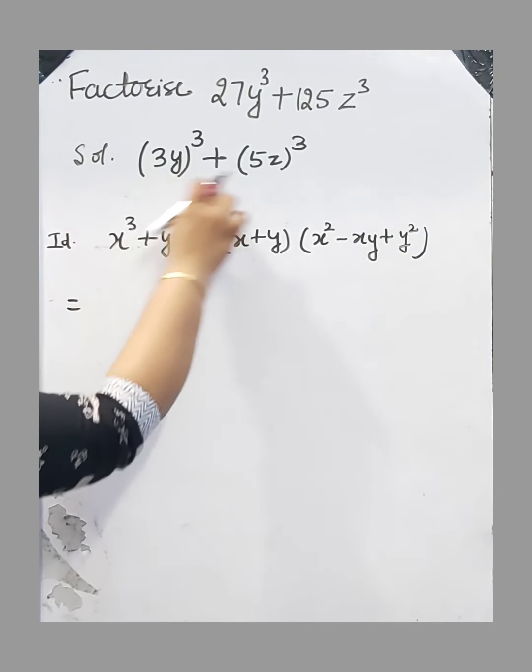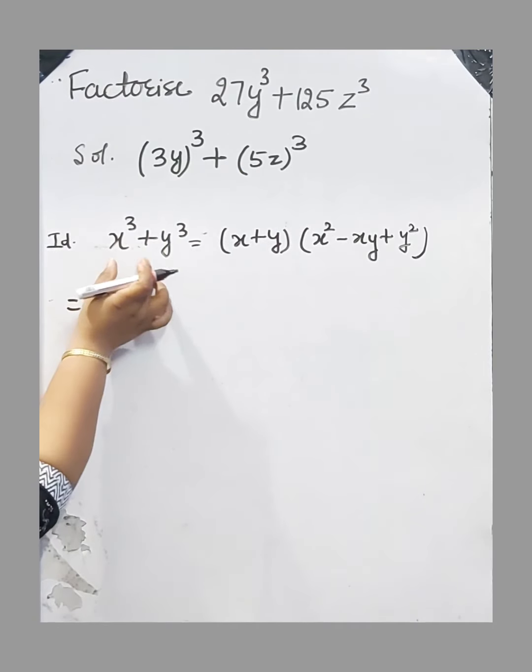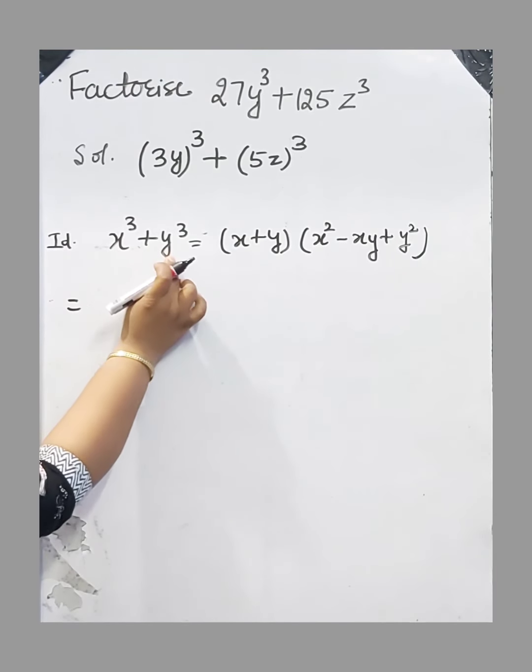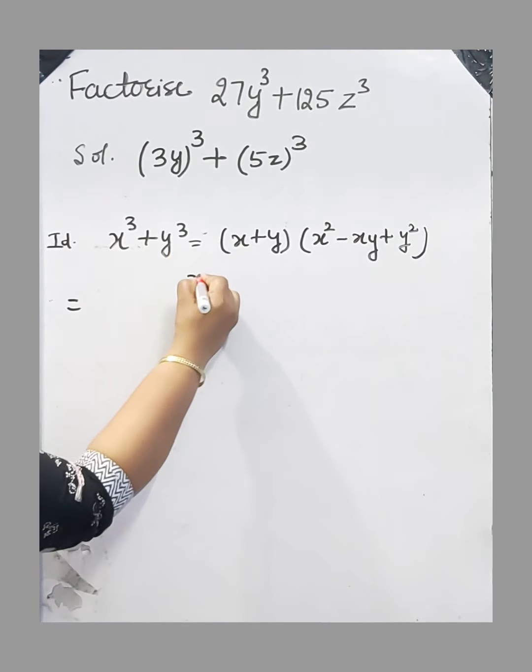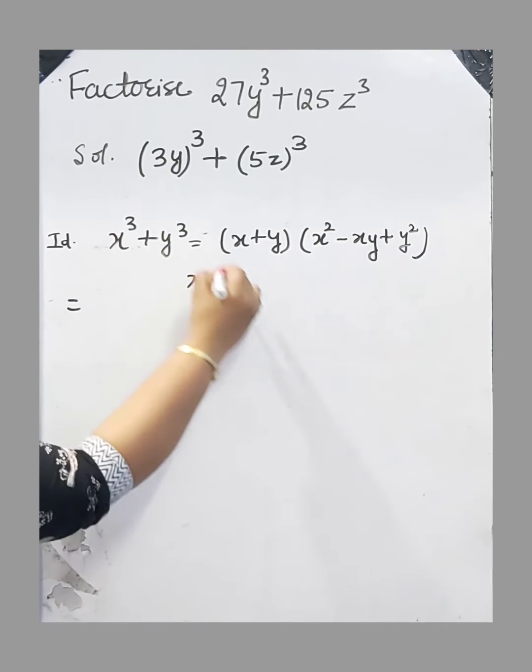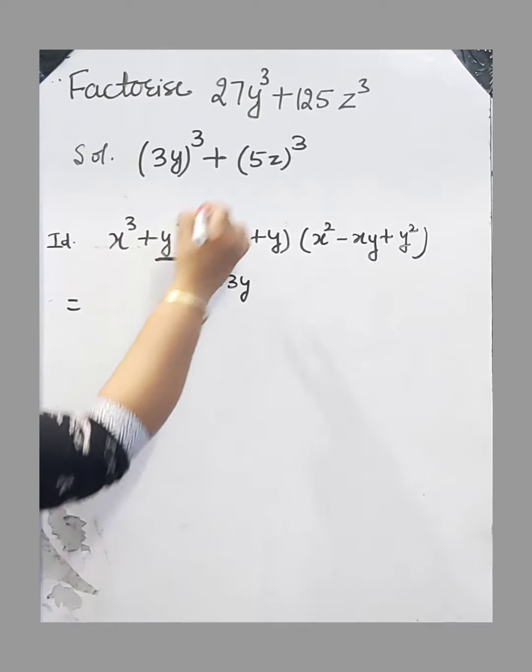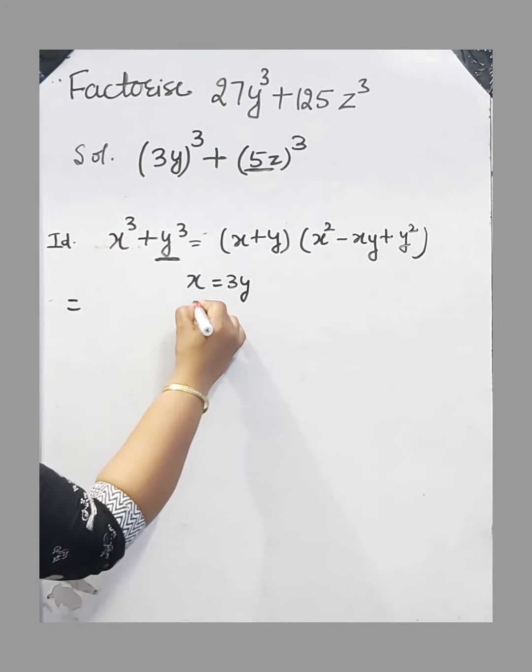Compare this question's formation with the left-hand side of the identity and find the value of x and y. Here, x equals 3y, and y is our second term of the identity. Therefore, y equals 5z.